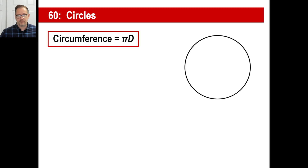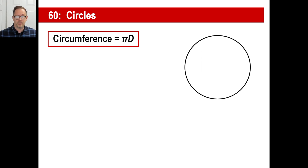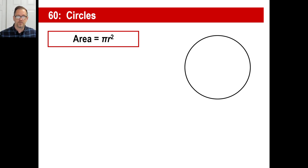Memorize this: the circumference of a circle is found by taking the diameter and multiplying it by pi — you can just use 3.14. If you're making a building and need to be really accurate, you'd use more decimal places, but memorize that formula. The second formula: the area of a circle is pi times the radius squared.